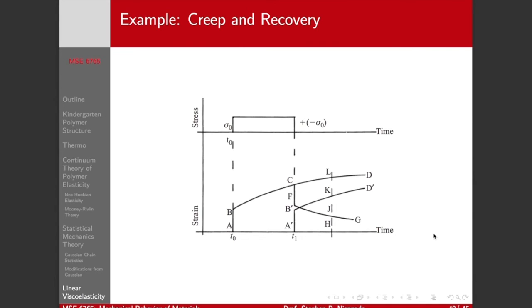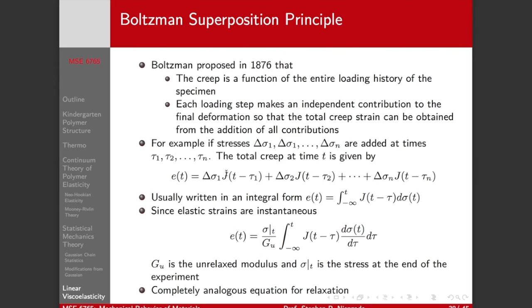And that is basically the Boltzmann superposition. And this just says that I can add my individual loading event. My total strain is given by the individual loading events. And usually we write it as an integral rather than as a sum over a huge bunches of time. And we say the elastic strains are instantaneous, so we can define what is known as this unrelaxed modulus. And this stress as a function of time gives us the stress at the total end of our experiment. So this is kind of like an instantaneous, and this is a deviation from that. This is an average response, and this is considered like a deviation from that average response. And we have completely analogous equations for stress relaxation.